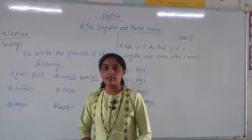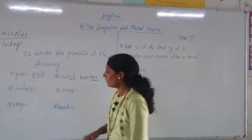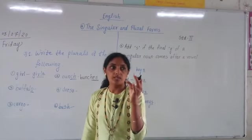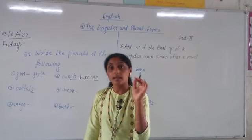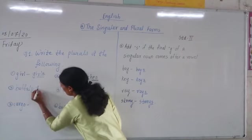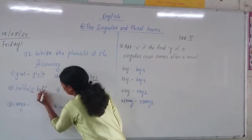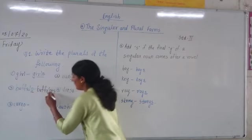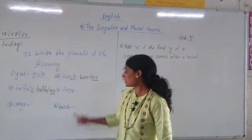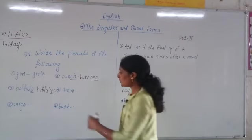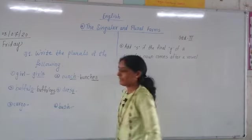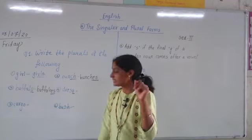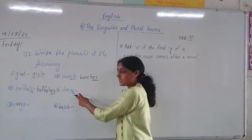The next example is 'buffalo' — the word ends with 'O'. The rule is the same: words ending with 'O', 'CH', 'SH', 'S', or 'X' take 'ES'. So 'buffalo' becomes 'buffaloes'. The word 'dress' also ends with 'S', so we add 'ES'.